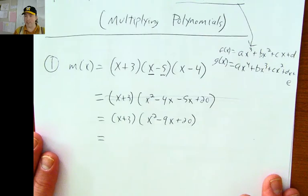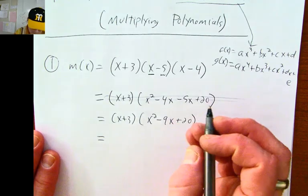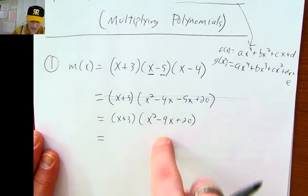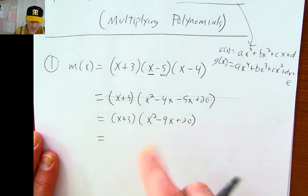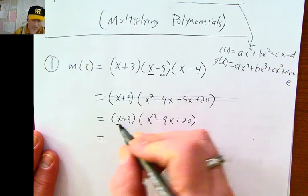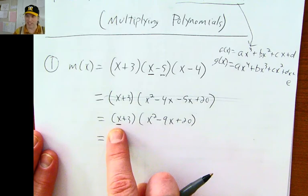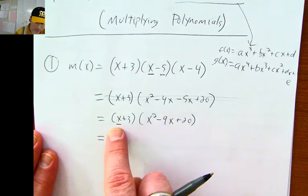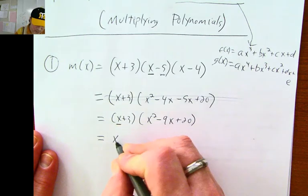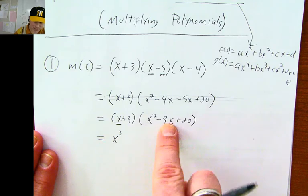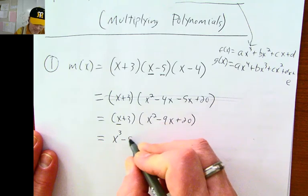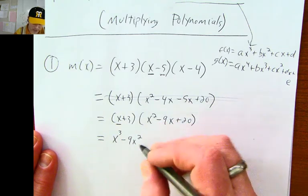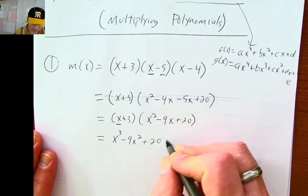Alright, so next we're going to do the same thing, but this time we're distributing x plus three into x squared minus nine x plus twenty. First step, just like the last problem, is to distribute the x into this trinomial. x times x squared is x cubed, x times negative nine x is negative nine x squared, and x times positive twenty is positive twenty x.